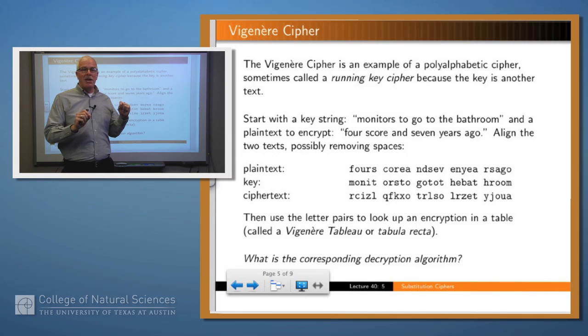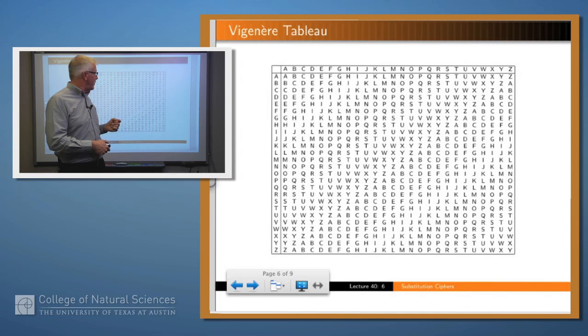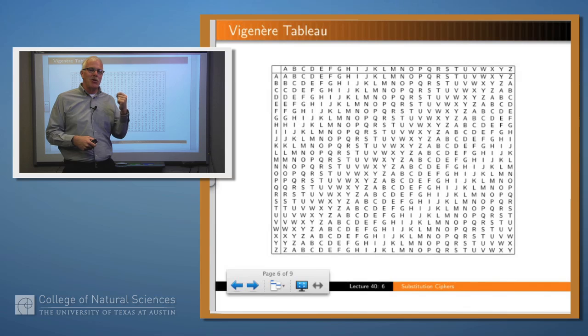So what you do is you line up those two strings and then you use the pairs of letters from the plain text and the key as indices into a particular table to tell you what the cipher text letter at that position is. So that table is called the Vigenere tableau and here it is. If you look at this for more than a minute or two, what you'll see is what's going on here is you've got 26 different Caesar ciphers and the Caesar cipher that you picked for any letter position depends upon the corresponding letter in the key.